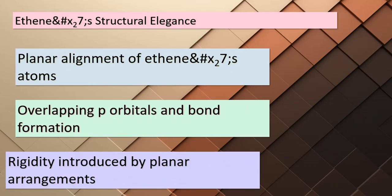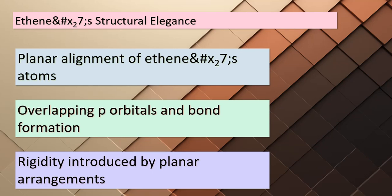Let's dive deeper into the elegance of ethene's structure and its connection to pi bonds. All six atoms in ethene lie in a single plane — this arrangement is essential for the formation of pi bonds. The p orbitals on each carbon atom can effectively overlap and create a pi bond only when these atoms are in the same plane. This requirement for planar alignment introduces rigidity into molecules. The presence of pi bonds doesn't just impact structure; it also plays a vital role in molecular stability.